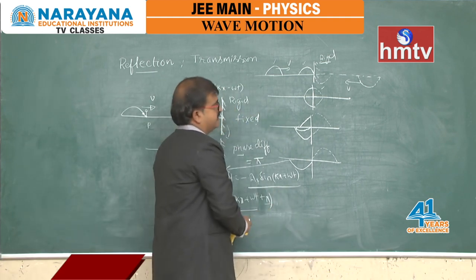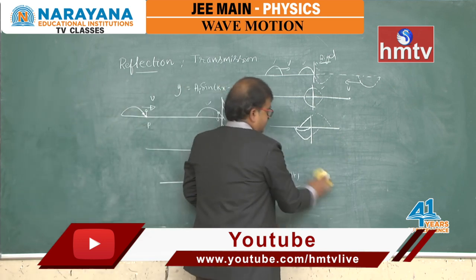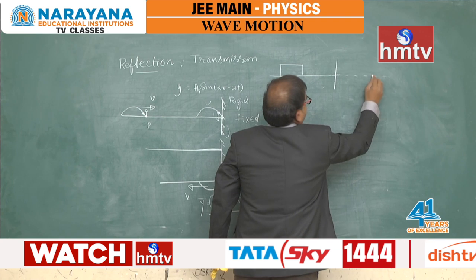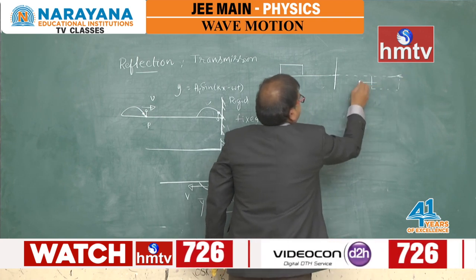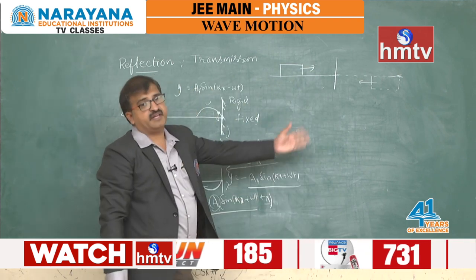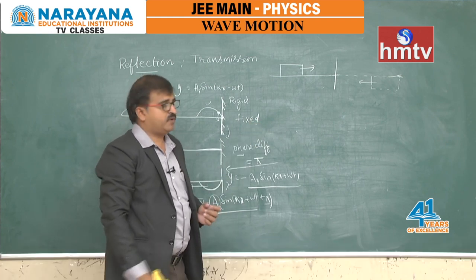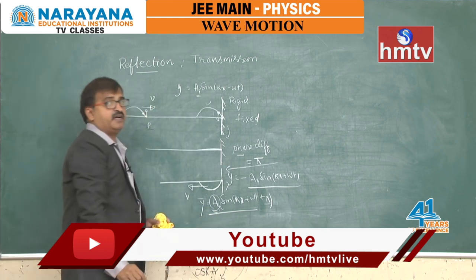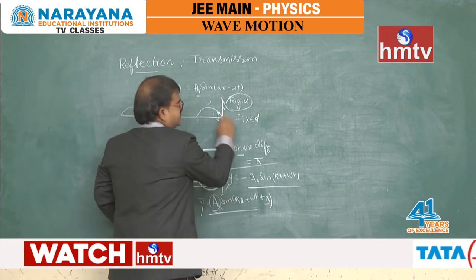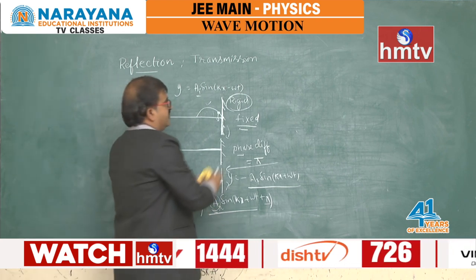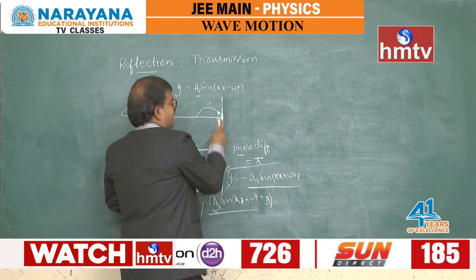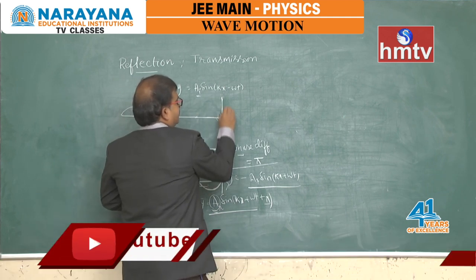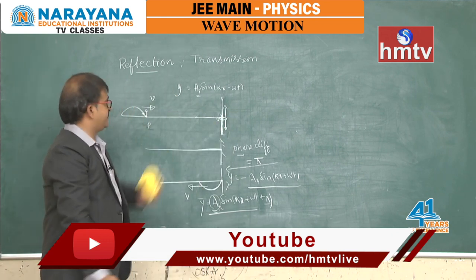Now consider another type of boundary — a free end, where the string has a ring-like structure that can vibrate freely up and down. This is different from the fixed end scenario. When the wave reaches this free end, the neighbouring particle applies an upward force on the ring.